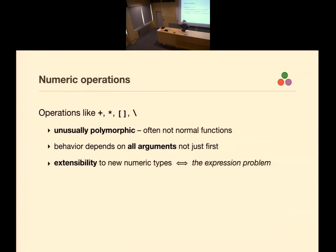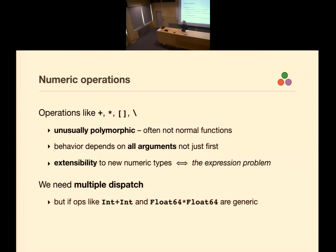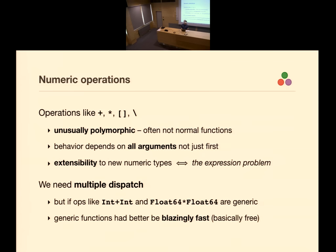The behavior depends on all the arguments, not just the first; in a dynamic language you really want it to be dynamic. If you want to extend these operations to new user-defined types — and in our case we're constrained to do this because even the built-in types are user-defined — this is tantamount to solving the expression problem. To me, this just screams one thing: we need multiple dispatch. That was one of the first design choices in the language.